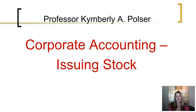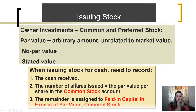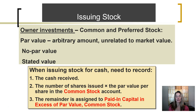This segment is going to discuss the accounting for the issuance of stock. When a corporation issues stock, they can issue either common stock or preferred stock. Both of these different types of stock will have a par value sometimes assigned to it. A par value is really an arbitrary amount that is unrelated to market value, and it is an amount that is assigned in the articles of incorporation.